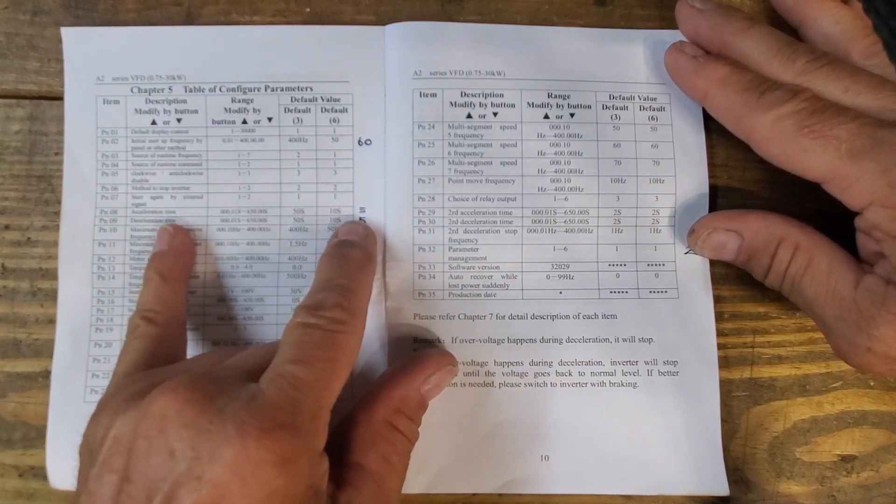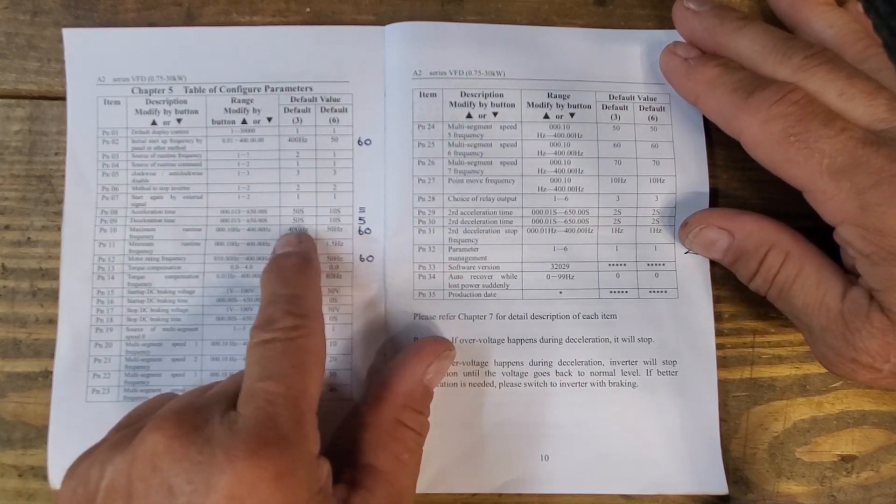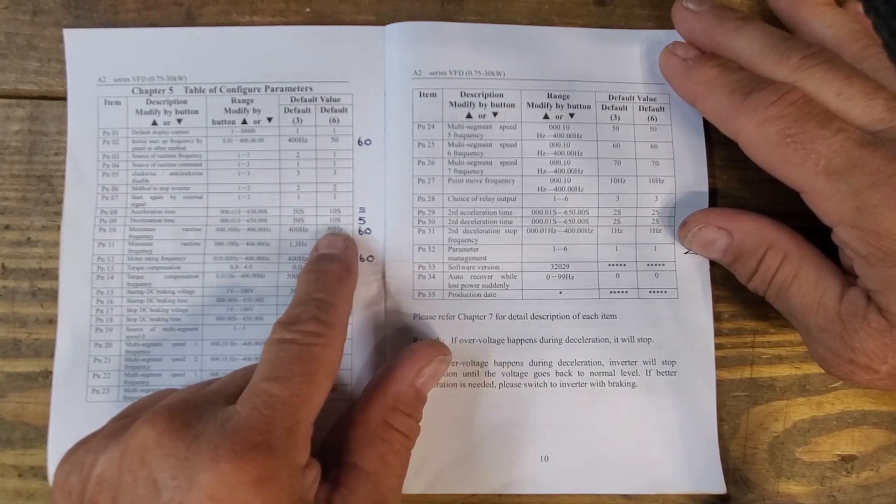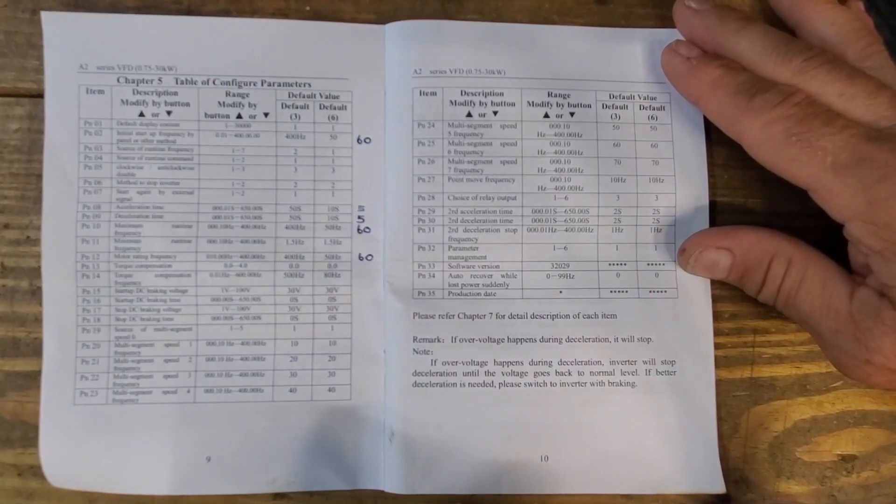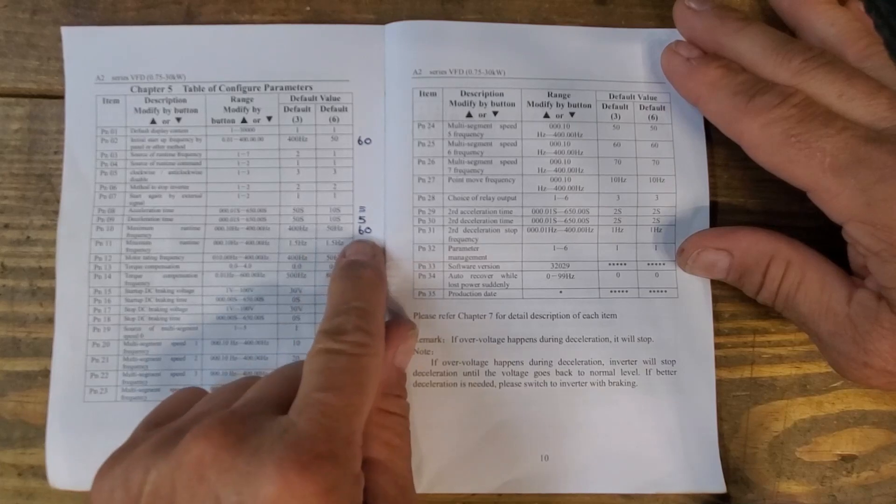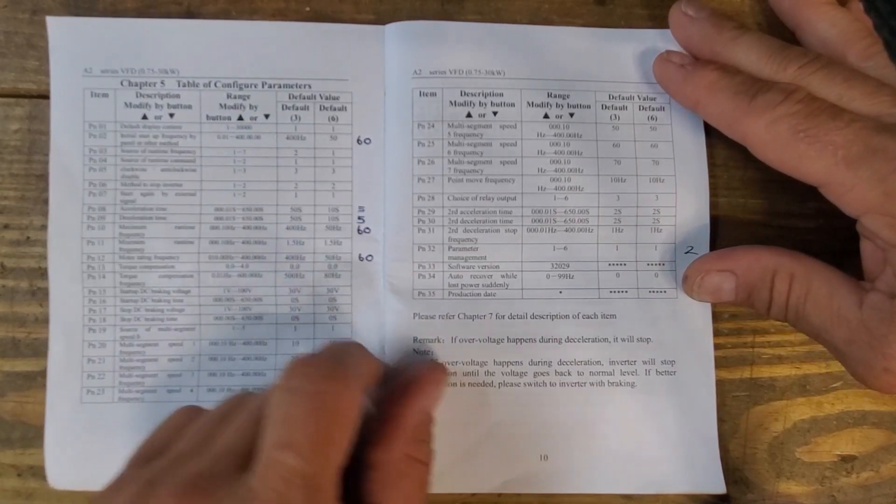Then we have the acceleration time. They have quite long acceleration and deceleration times. I didn't want it to take that long for my mill to spin up. Five seconds, even five seconds to be honest, it's a little slow. I may alter that.